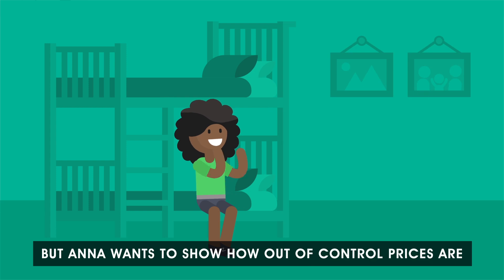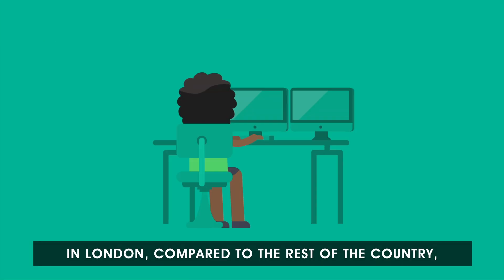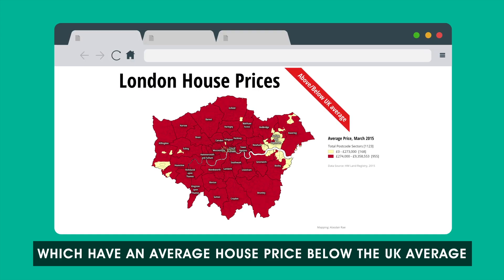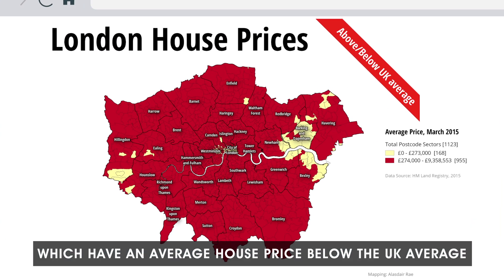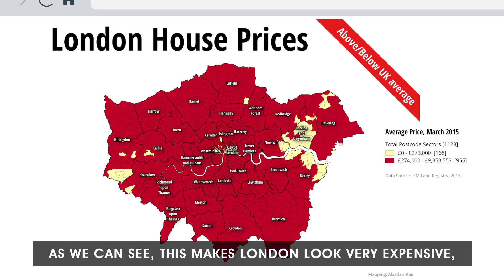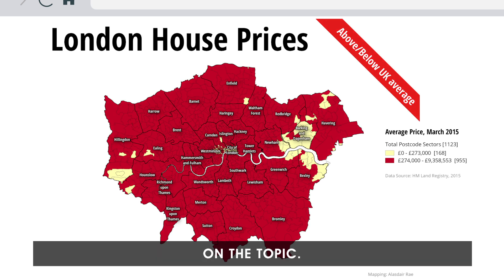But Anna wants to show how out of control prices are in London compared to the rest of the country. So she's made a map which shows areas in London which have an average house price below the UK average and areas which are above the national average. As we can see, this makes London look very expensive, and this more closely fits the national narrative on the topic.